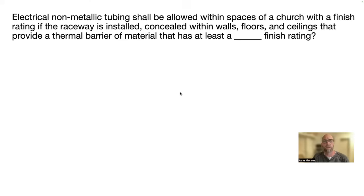Electrical non-metallic tubing shall be allowed within spaces of a church with a finish rating if the raceway is installed, concealed within the walls, floors, and ceiling that provide a thermal barrier of material that has at least blank finish rating. All right, guys. So first off, you may think, oh, we're talking about Smurf tubing up here, which we are. Don't go flipping to Smurf tubing. Go back to 518, which is places of assembly. So those are churches, and you'll find the answer, 15-minute finish rating. So a fire rating of 15 minutes, 518.4 C1.